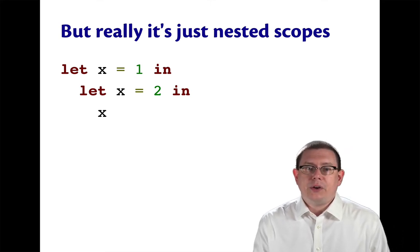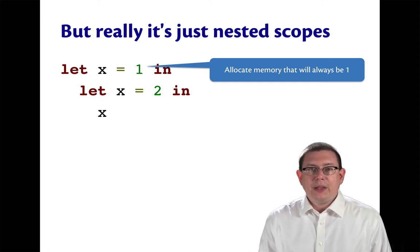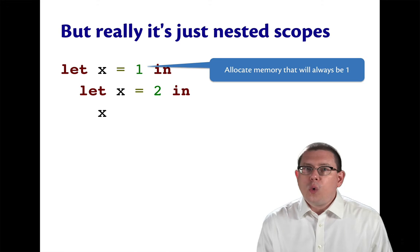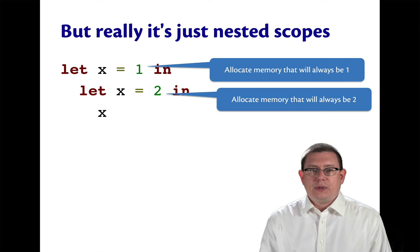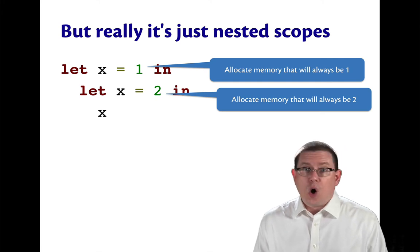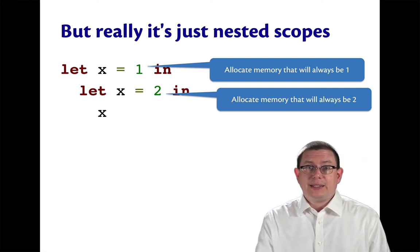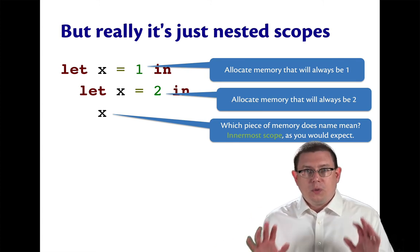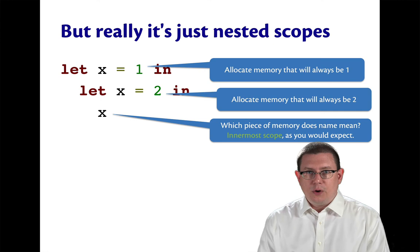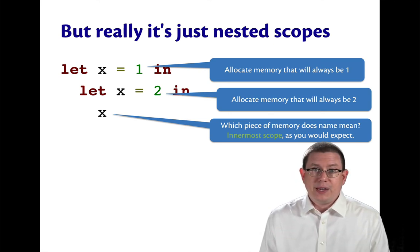One way to think about that under the hood is that the first let expression is allocating memory that will always store the value 1. The second let expression is allocating memory that will always store the value 2. And then when the let expression that is innermost has its body evaluated, which piece of memory do we look at for the value? We know what that is. It's going to be the innermost scope. That's the result of the rules that we have defined for evaluating let expressions.